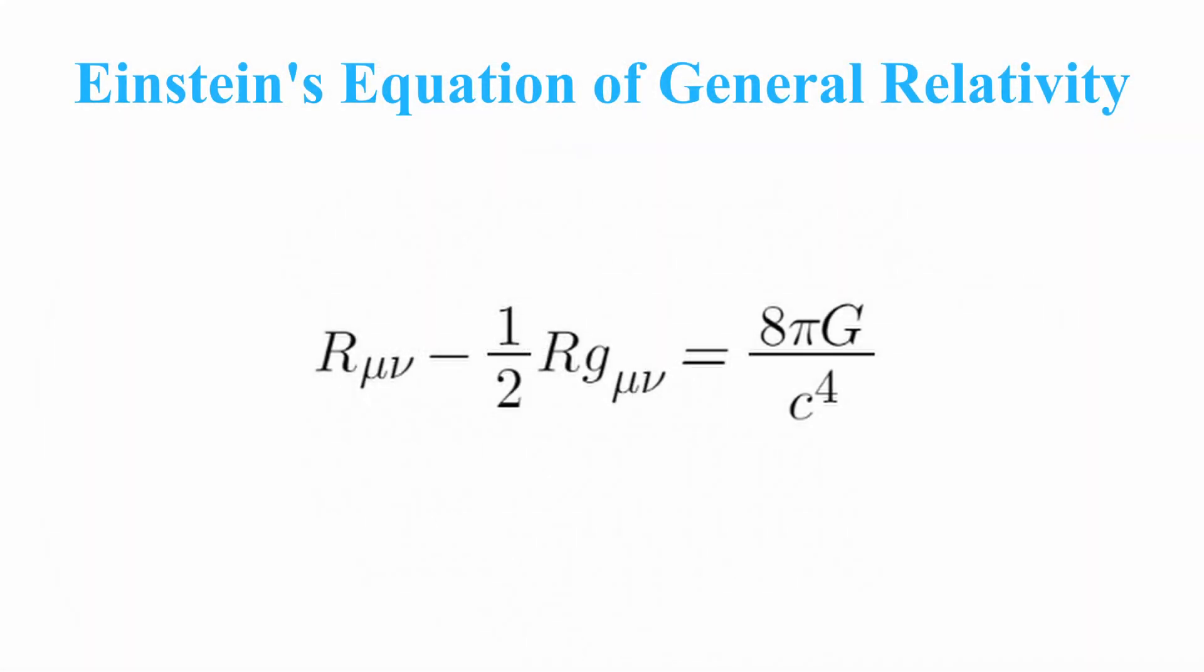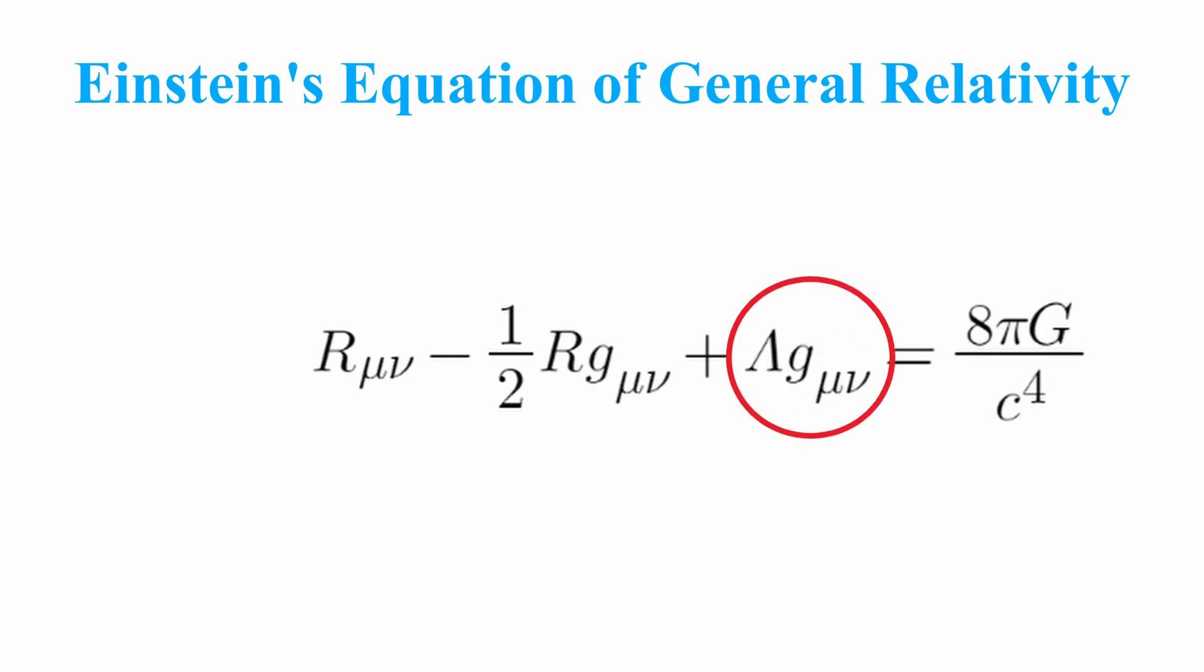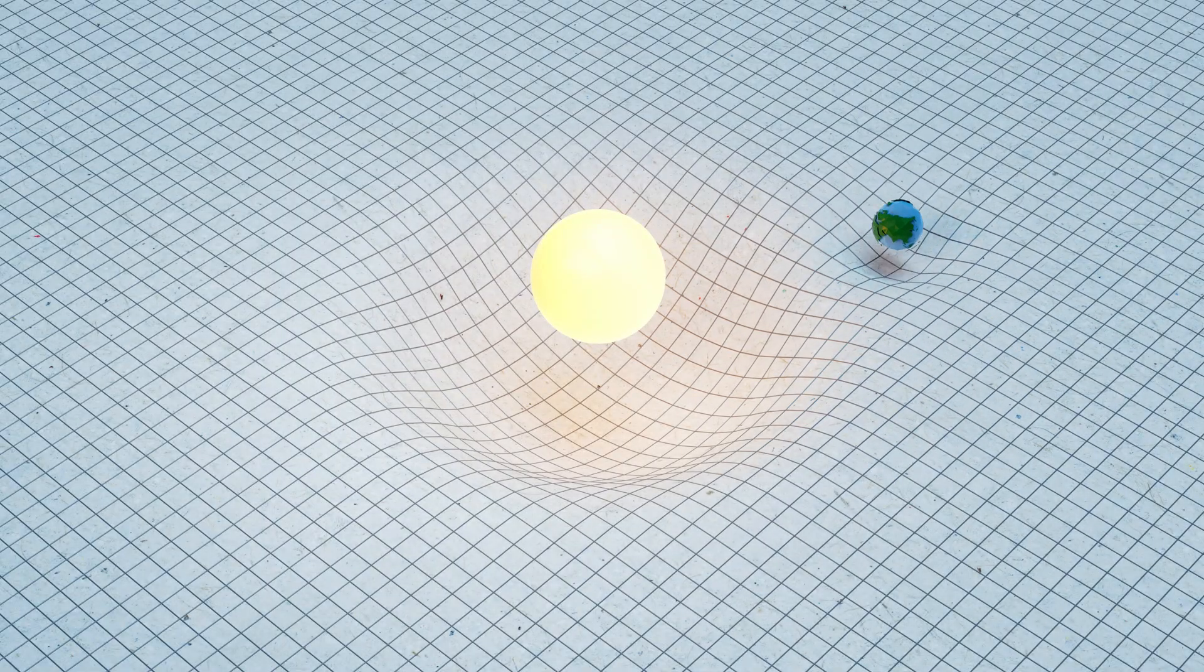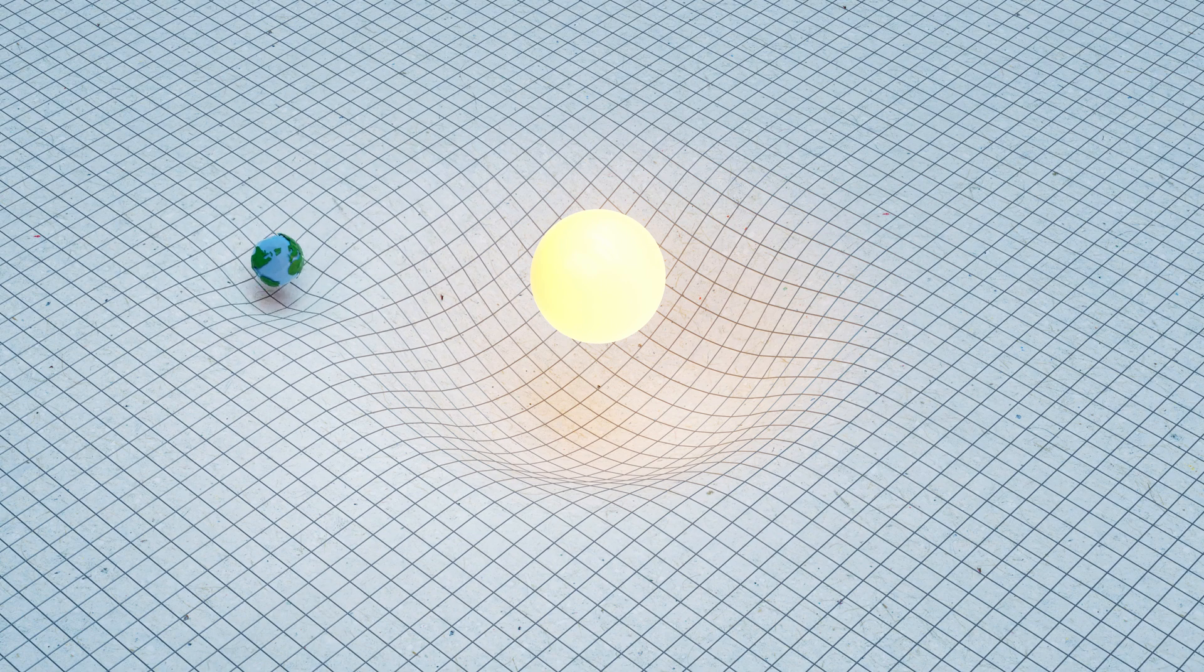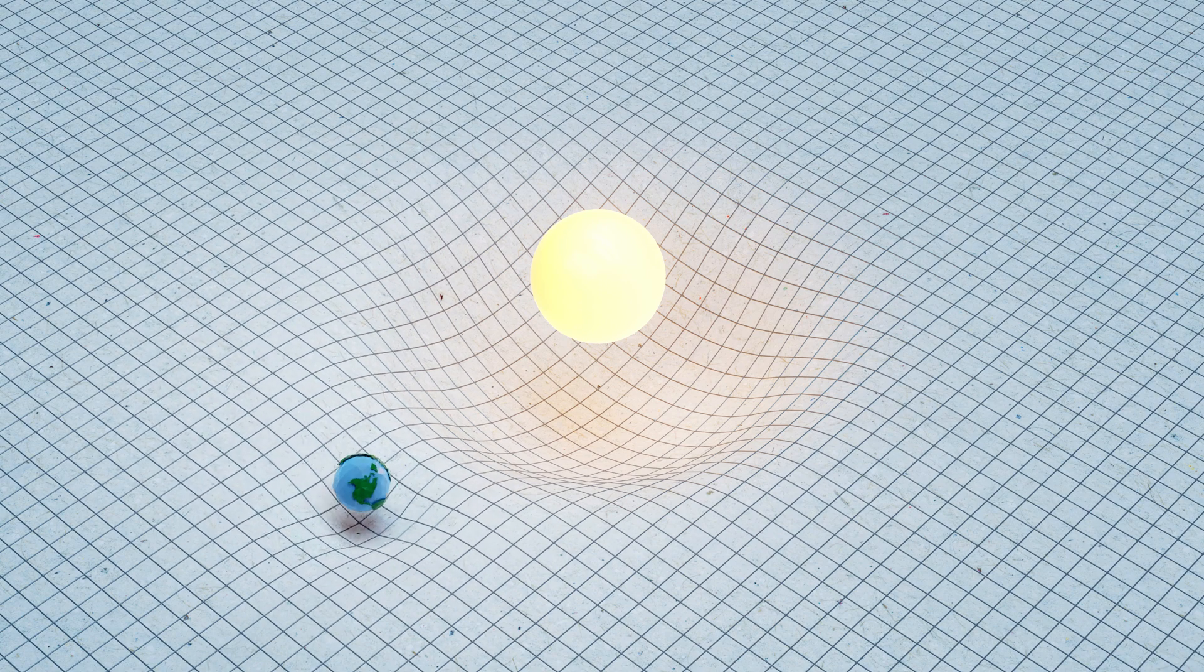It was an assumption he made and he reflected that assumption in a single term that he added to his greatest equation, his field equation of general relativity, which describes how mass and energy relate to the curvature of space. In other words, these were his gravitational equations.